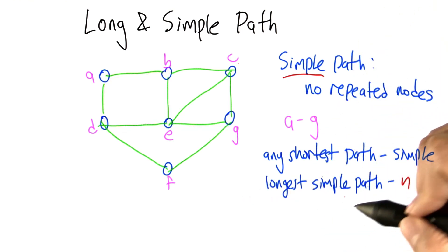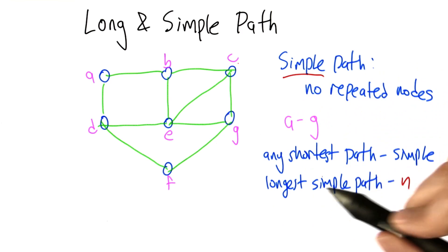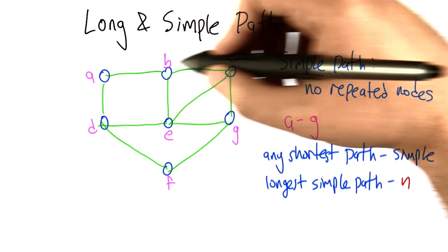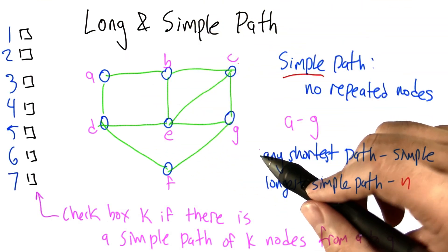Now the longest simple path that you can have can have at most n nodes on it because there's only n nodes in the graph and we're not allowed to repeat any. So the longest simple path is of length n. This graph has 7 nodes. So let's ask a question having to do with this graph here.